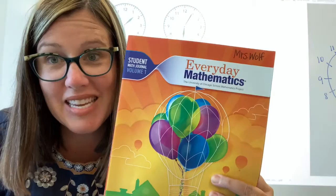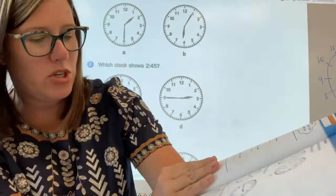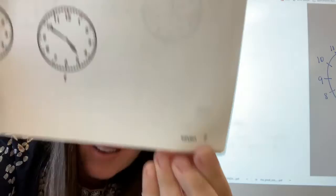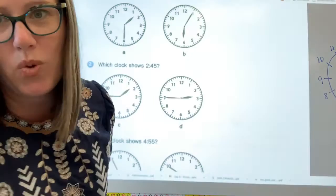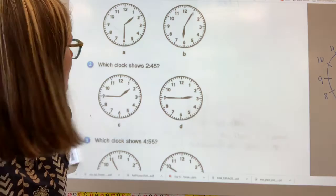We're going to do some math practice together in our workbook. Go find your volume one workbook. And I want you to turn to page seven. So go find page seven. This is what the page looks like. I have it projected on the screen behind me so we can do a couple practice problems together. So we're going to read the directions and answer the questions.